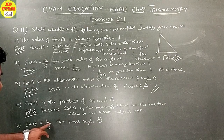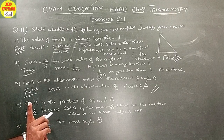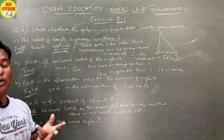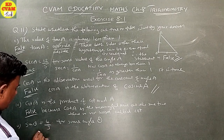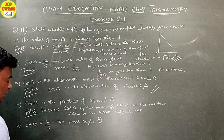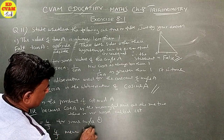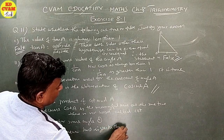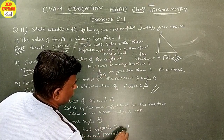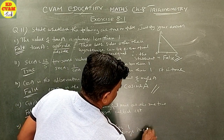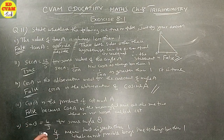Fifth: sin theta equals 4 upon 3 for some angle theta. Here, 4 upon 3 has numerator greater than 1, meaning sin theta would be greater than 1. But sine is always less than or equal to 1. Therefore, this is also false.